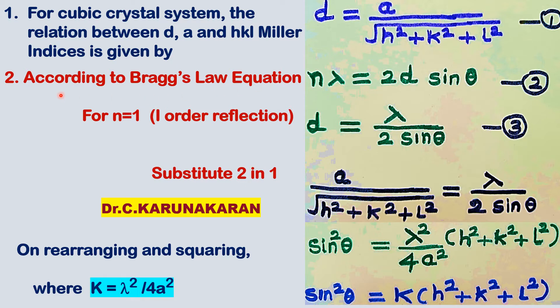According to Bragg's Law equation, N·λ = 2d·sinθ. For N equal to 1, this equation is rearranged to derive a useful working form.